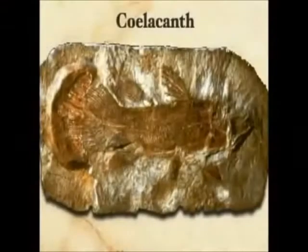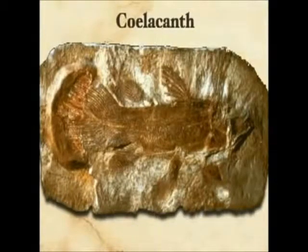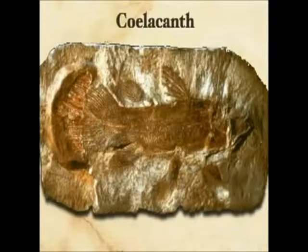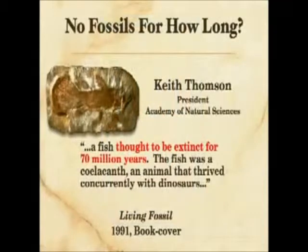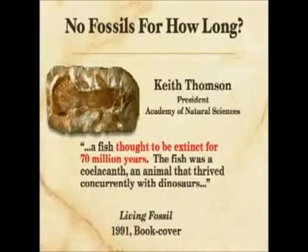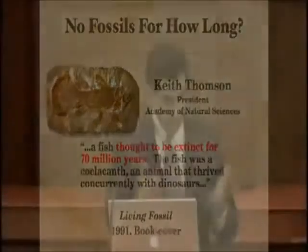To give an illustration of living fossils, maybe the most famous one is the coelacanth — a beautiful, rather strange-looking fish found commonly in the fossil record. Keith Thomson, president of the Academy of Natural Sciences, describes it as a living fossil: a fish thought to be extinct for 70 million years — about the time the dinosaurs went extinct. The coelacanth thrived concurrently with the dinosaurs, but from the point where they're supposed to have gone extinct, all the way up the column you find no coelacanths, and virtually no dinosaurs.